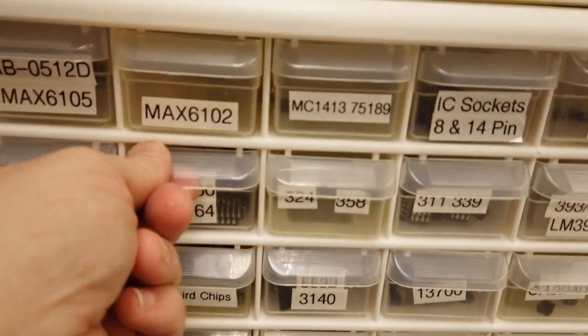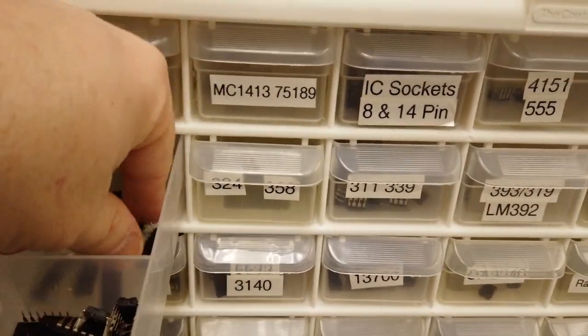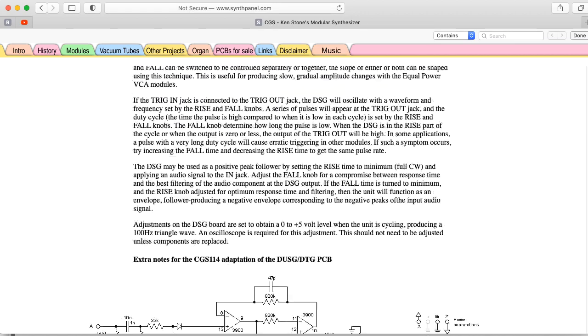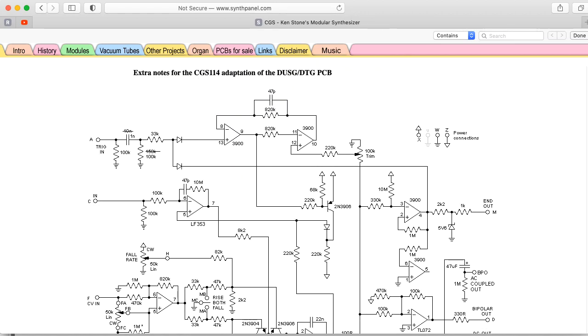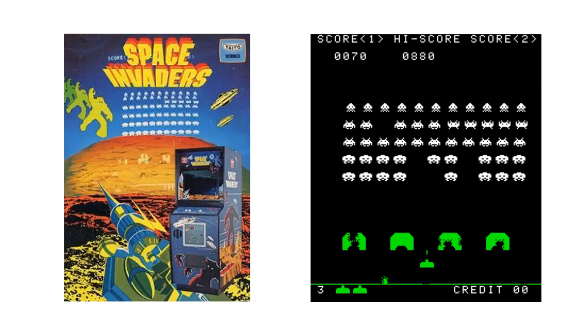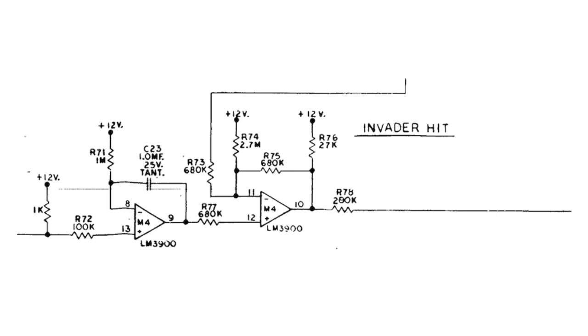The LM3900 Norton amp was particularly loved by synthesizer designer Serge Tcherepnin. And if you're interested in the Serge designs, I would recommend looking at the recent Cat Girl synth work by Ken Stone. And surprisingly, the sound effects in the arcade game Space Invaders are analog circuits featuring the LM3900.